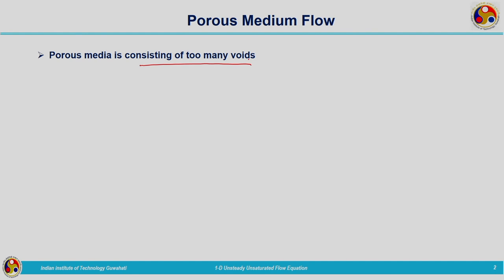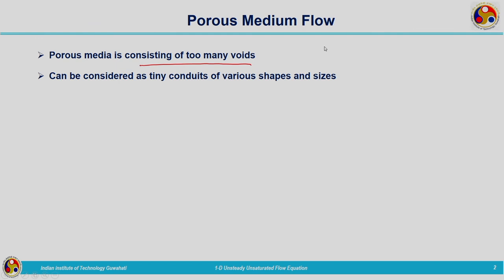We know already that in a porous media, if you consider a sample, it consists of solid soils and also voids. Voids are filled with air and water. This porous media is consisting of too many voids, and these voids can be considered to be connected to each other. If that is the case, it can be considered as tiny conduits of various shapes and sizes.